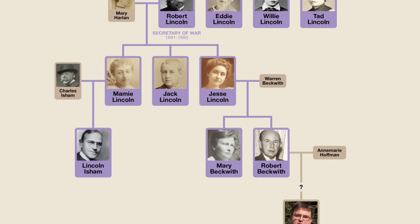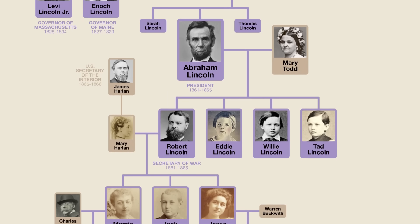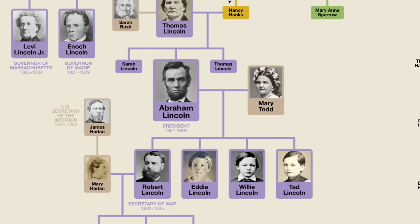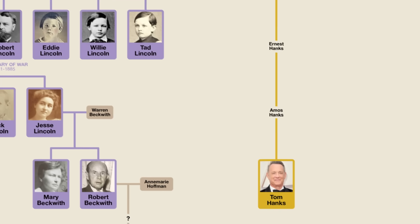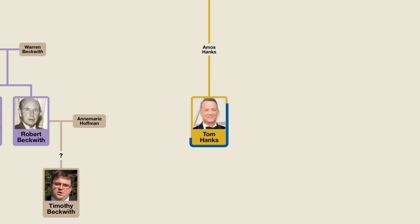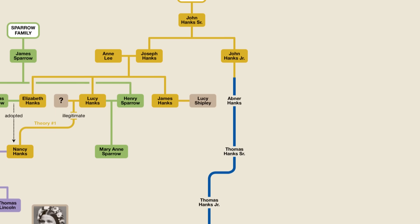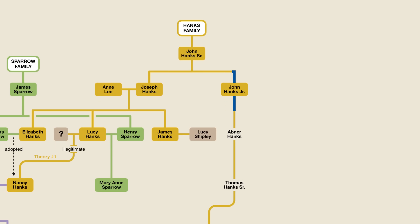I want to conclude by showing you some fun connections between Abraham Lincoln and several big names in Hollywood. As I mentioned earlier, Lincoln's mother's name was Nancy Hanks. And of course, when most people hear the name Hanks, they think of the popular actor Tom Hanks. Well, Tom Hanks is indeed related to Nancy Hanks and thus to Abraham Lincoln as well. If we go up seven generations from Tom, we come to John Hanks Jr., who was the brother of Joseph Hanks, the grandfather of Nancy Hanks. So, that makes Tom Hanks and Abraham Lincoln third cousins, four times removed.